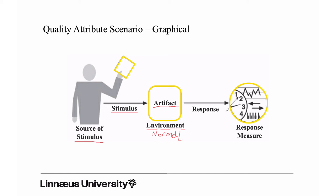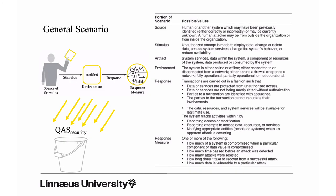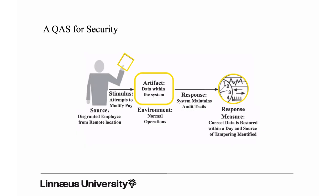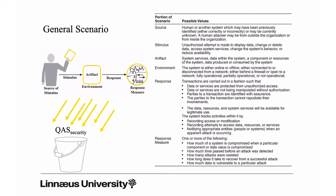There is even more help for you because they provide something called general scenarios. These general scenarios - you can provide general scenarios for various quality attributes or concerns. That general scenario will give you a set of possible values for the source, for the stimulus, for the artifact, for the environment, for the response, and for the response measure. You can actually combine the possible values into your quality attribute scenario.